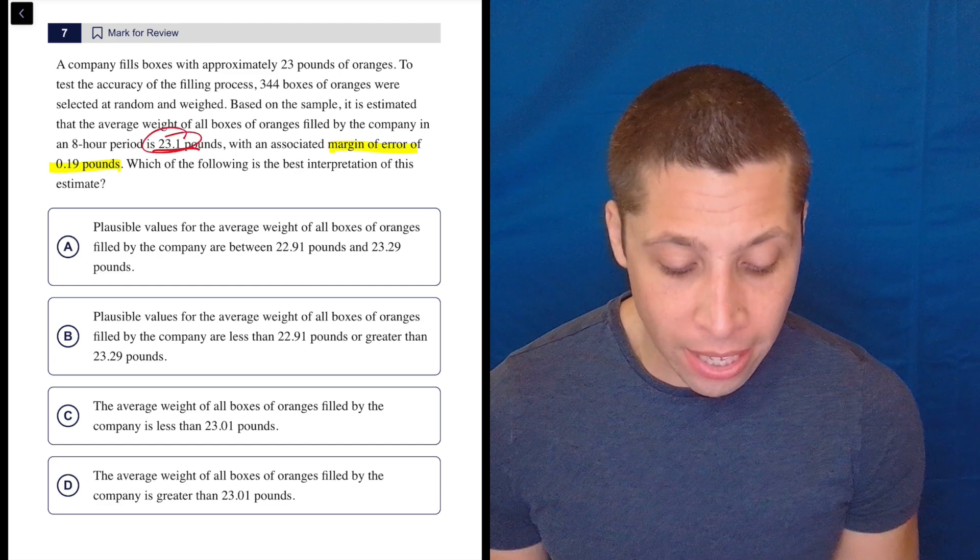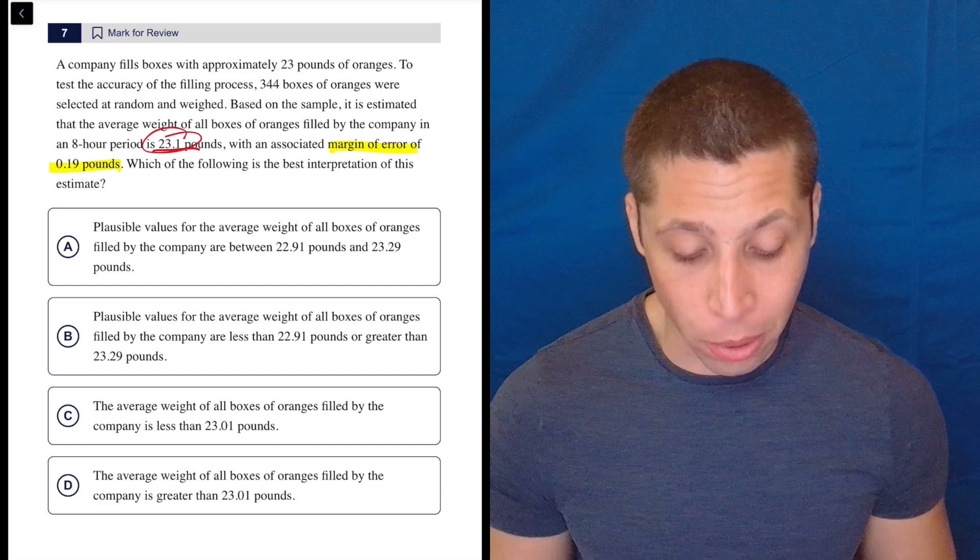So basically, take the number that they gave you and add and subtract 0.19 from it. So 23.1 plus or minus 0.19 is kind of how I'm thinking about this as I go through.